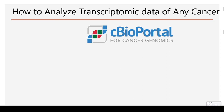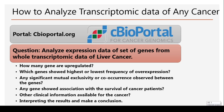So how do you analyze the transcriptomic data of any cancer? Here in this tutorial, I have used the example of cBioPortal. We will go through this whole exercise. The question is: analyze expression data of a set of genes from whole transcriptomic data of liver cancer. This transcriptomic data can be from any microarray or RNA sequencing technologies. After getting any dataset of any cancer — here for example we have mentioned liver cancer — we will try to find answers: how many genes are upregulated, which genes showed highest or lowest frequency of overexpression, and any significant mutual exclusivity or co-occurrence observed between the genes.